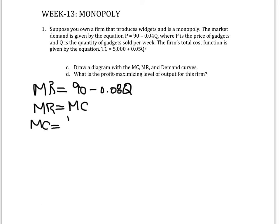So we'll have to find the marginal cost, which we know is the derivative of total cost with respect to output, which in this case will be 0.1Q.